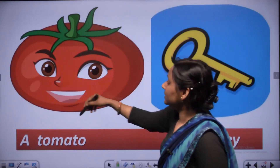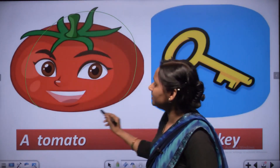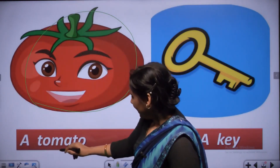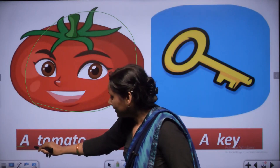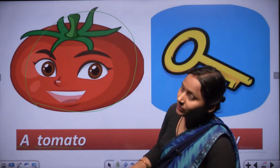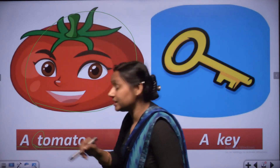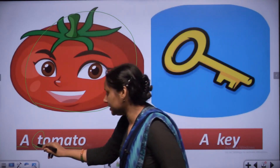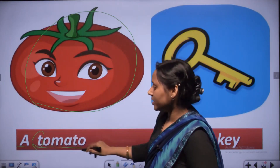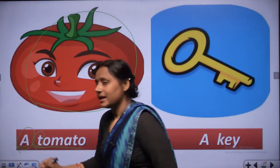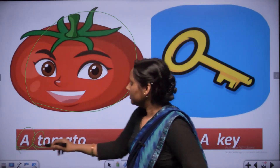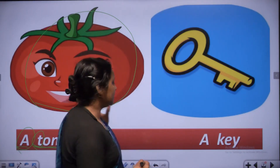This is a red color vegetable - T, O, M, A, T, O - tomato. T is consonant. First letter is T, which is a consonant. So we use A - a tomato.